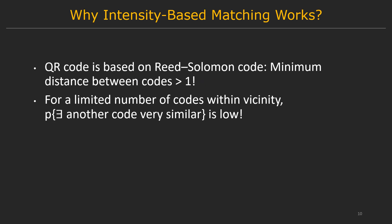So why does this work? Here are two insights. First, QR codes use Reed-Solomon error correction, which means the minimum distance between two possible codes is greater than one bit. But more importantly, because we only have a limited number of codes in the vicinity, it is very unlikely that there is a code that is very close to the correct code in terms of number of bits. Therefore, even for a highly degraded image, it is very unlikely to be matched to a wrong code.